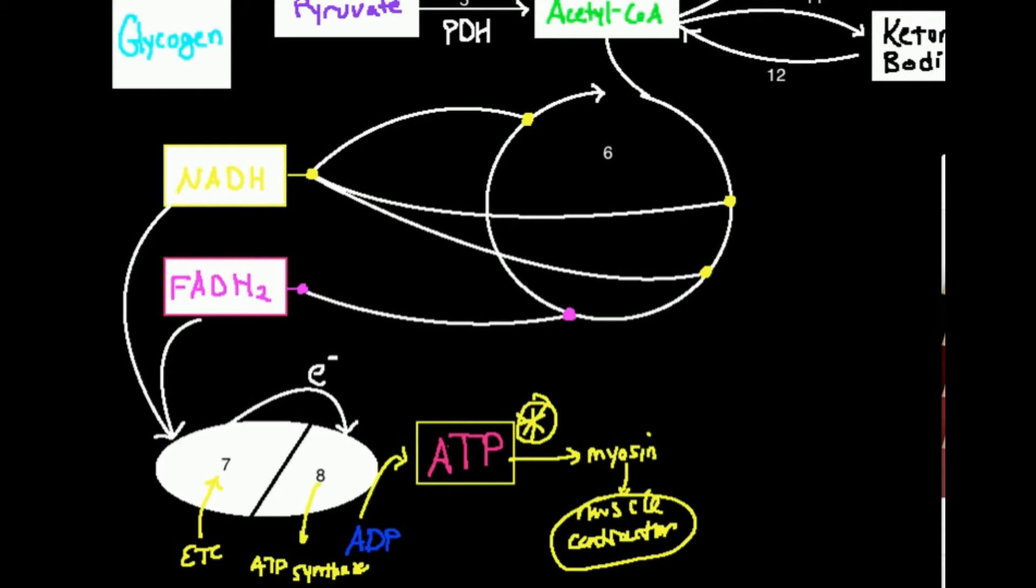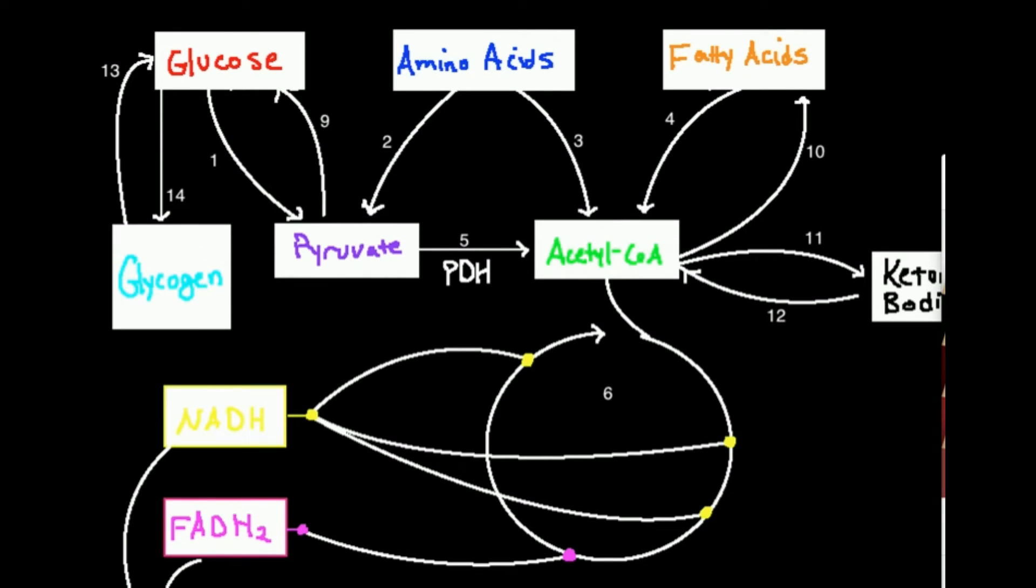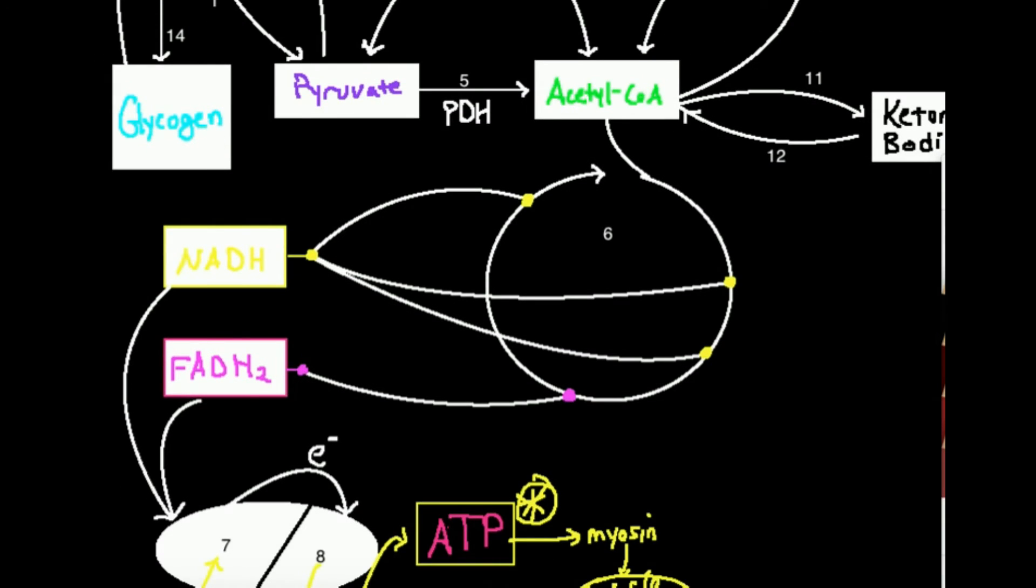So let's go back up and just look to see what we saw. I can turn glycogen into glucose. That's glycogenolysis. I can then run glucose through glycolysis, turn that into pyruvate, and I have this enzyme pyruvate dehydrogenase, which converts pyruvate into acetyl-CoA. Then acetyl-CoA can move into the Krebs cycle or TCA cycle, number six.